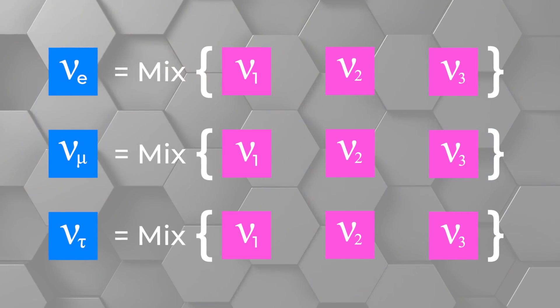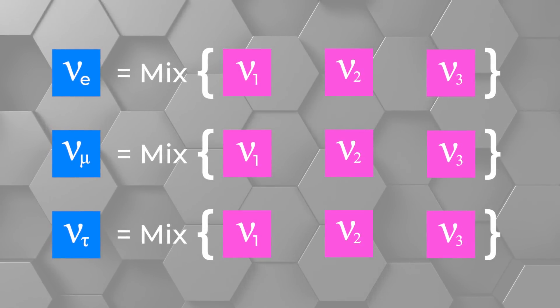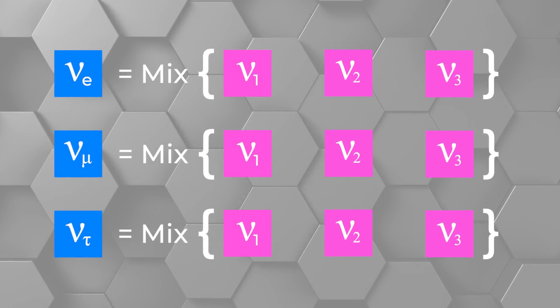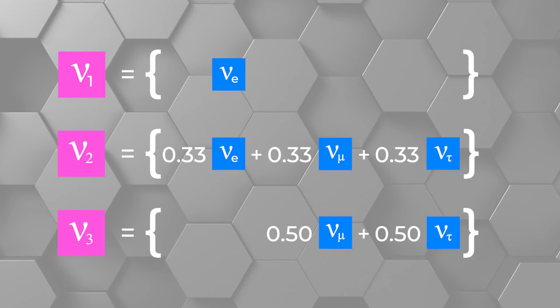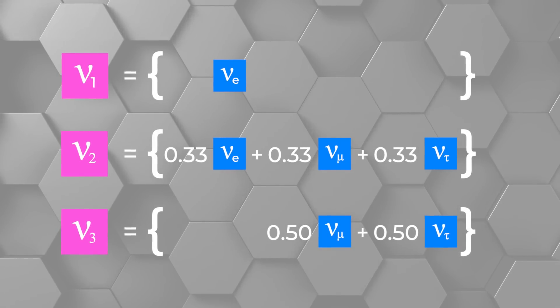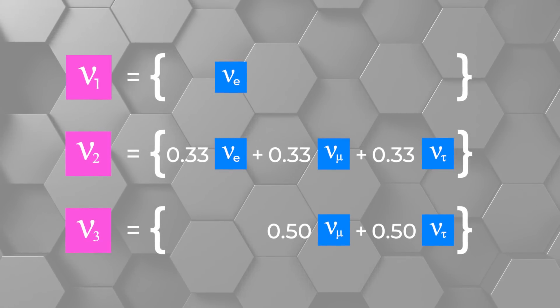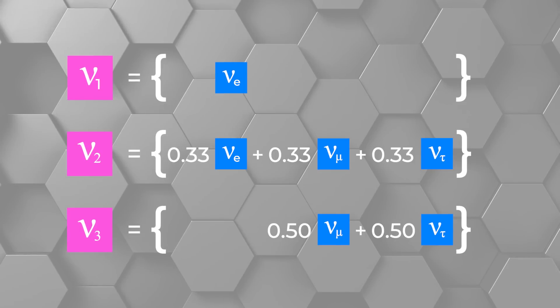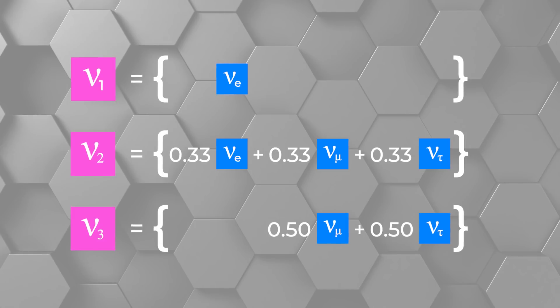You'd think that the electron neutrino might be the same as neutrino 1, 2, or 3, but that's not how it works. Each of the electron, muon, or tau type neutrinos is a mix of the three different numbered neutrinos. That means each uniquely flavored neutrino doesn't have a unique mass. The converse is also true — each mass doesn't have a unique flavor. For instance, nu 1 is mostly electron neutrinos, but neutrino 2 is roughly an equal amount of electron, muon, and tau neutrinos. Nu 3 is about a 50-50 mix of muon and tau neutrinos.